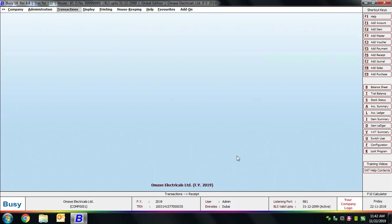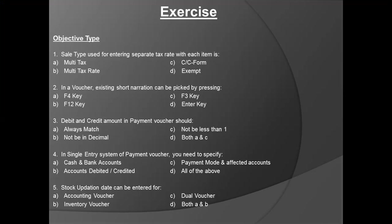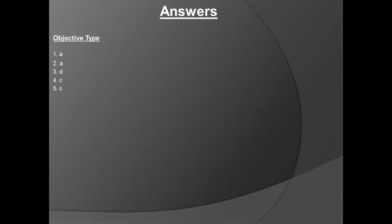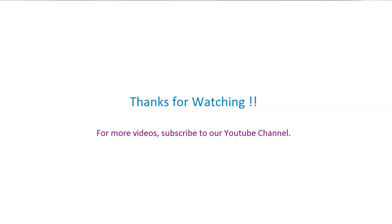This covers everything in this chapter — we have discussed transactions of sale, purchase, purchase return, sale return, payment, and receipt. At the end of the chapter there are exercises you can attempt. We hope that after going through this chapter you will be able to easily enter these transactions in BUSY. Thanks for watching — for more videos, subscribe to our YouTube channel.